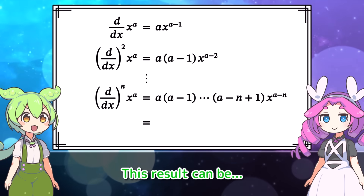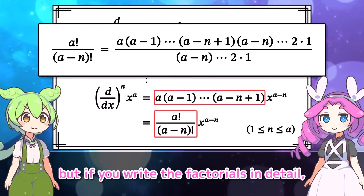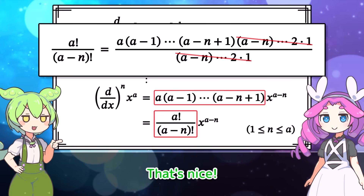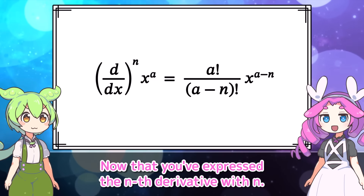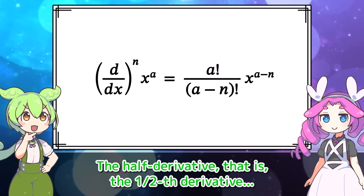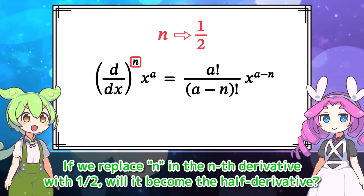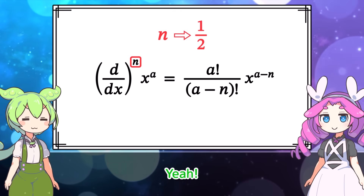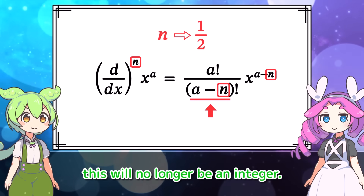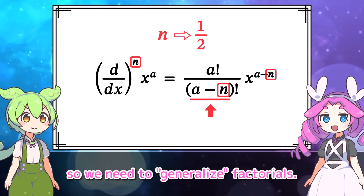This result can be expressed using factorials. This transformation is difficult at first glance, but if you write the factorials in detail, you can see how the denominator cancels out part of the numerator. Now that we've expressed the nth derivative with n, the half derivative — or one-half derivative — would be obtained by replacing n with one-half. But if you try to forcibly replace n with one-half in this formula, the result will no longer be an integer. Normally, factorials are defined only for non-negative integers, so we need to generalize factorials.